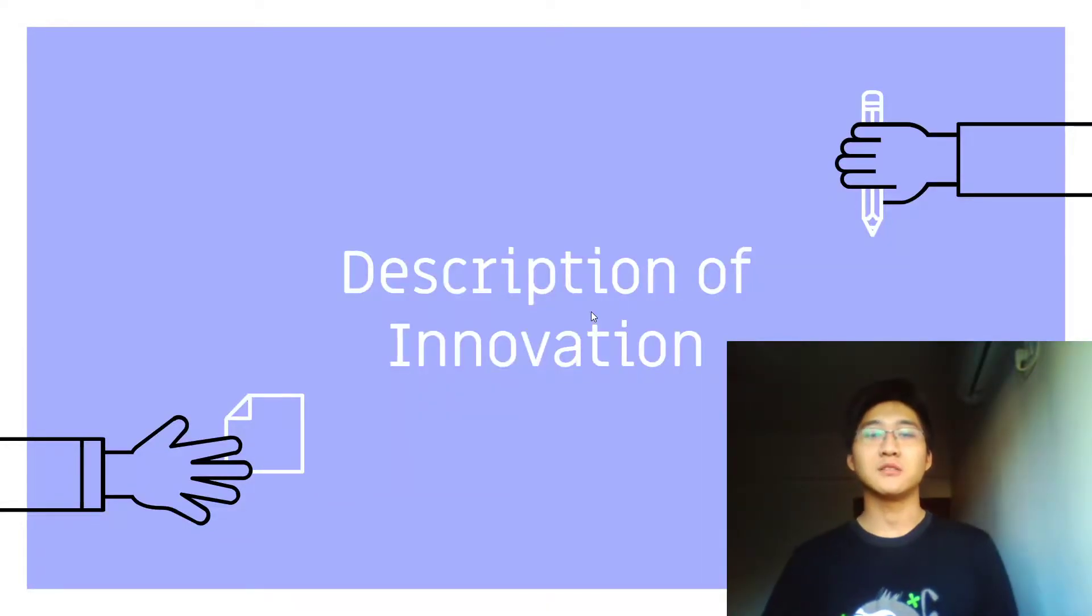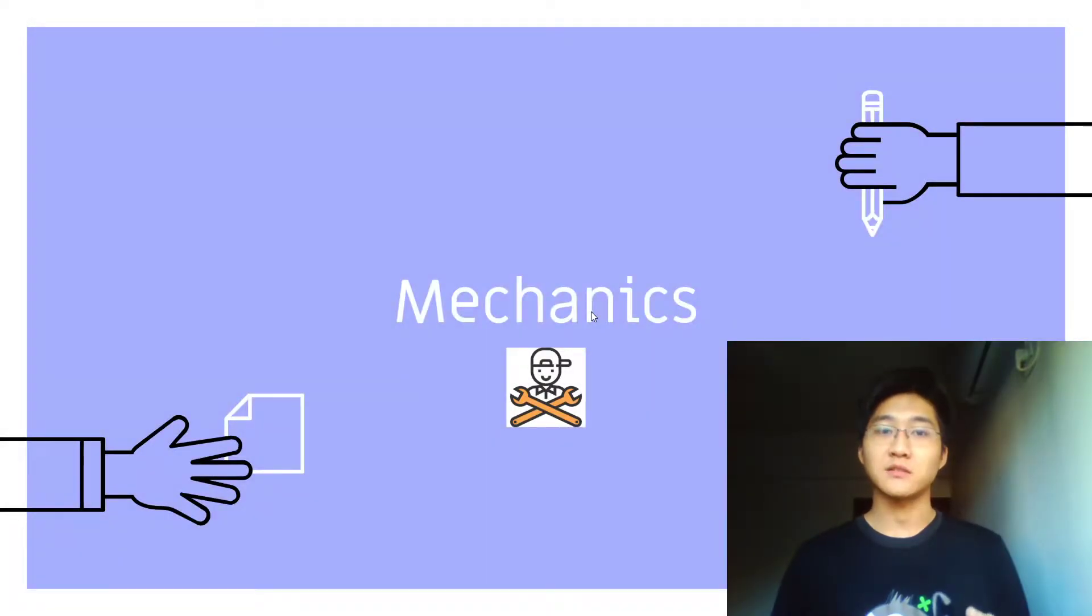All right, thanks Giorgio for talking about the background information about our innovation. Now I will talk about the technical details of our robot. For the robot, there are three parts: mechanics, electronics, and embedded control.